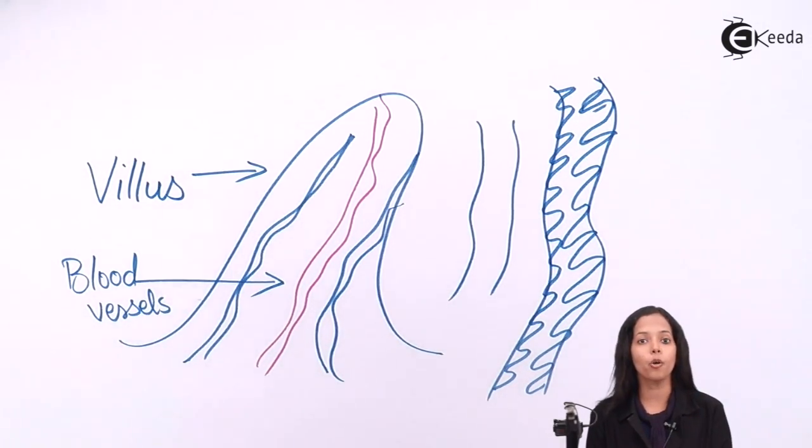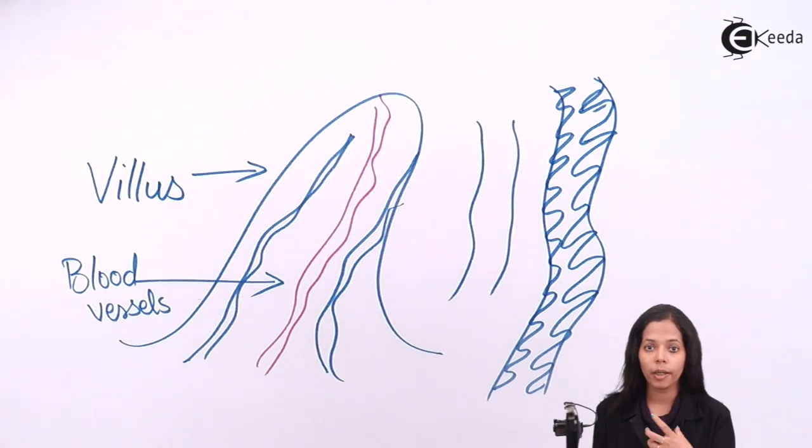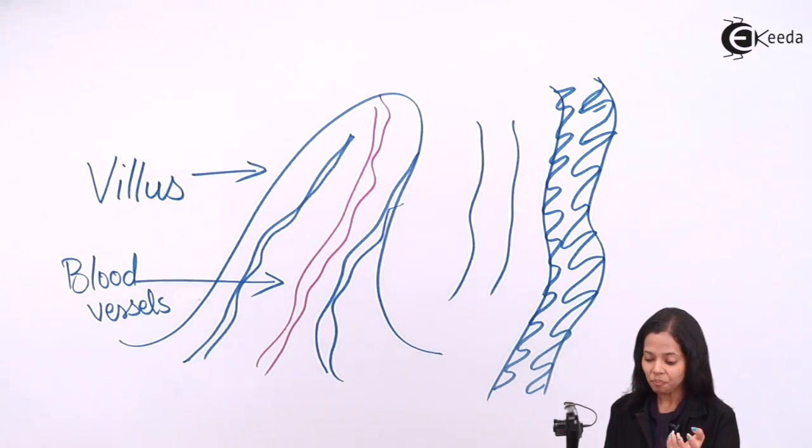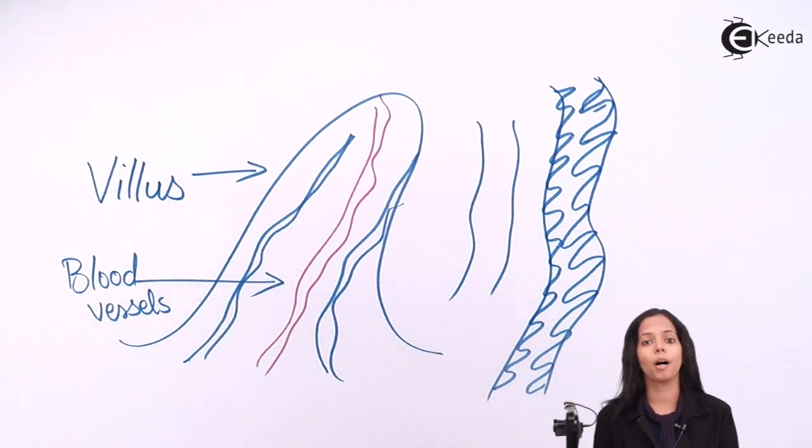One important thing: complete digestion occurs in small intestine because almost all nutrients are absorbed in small intestine. There are some other things present in small intestine.